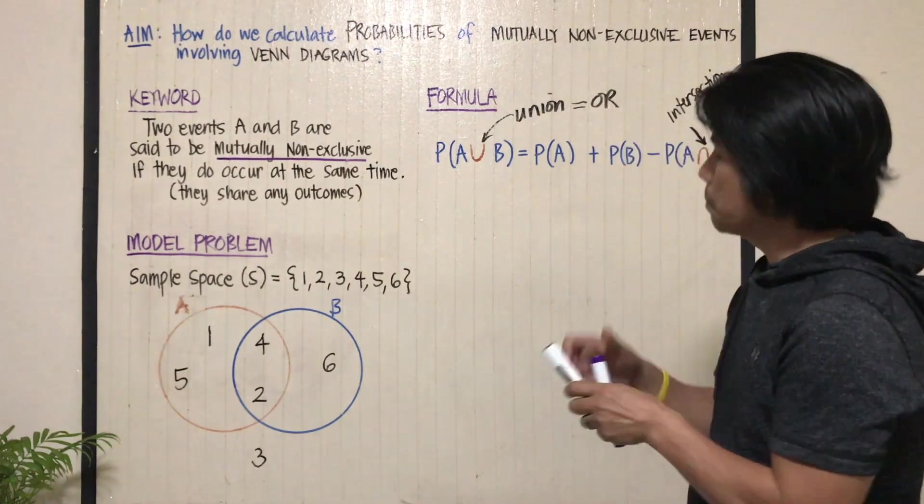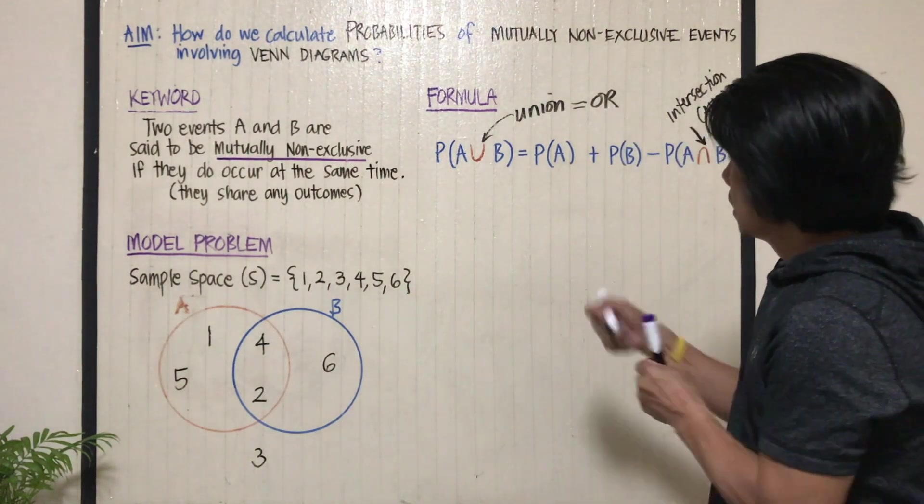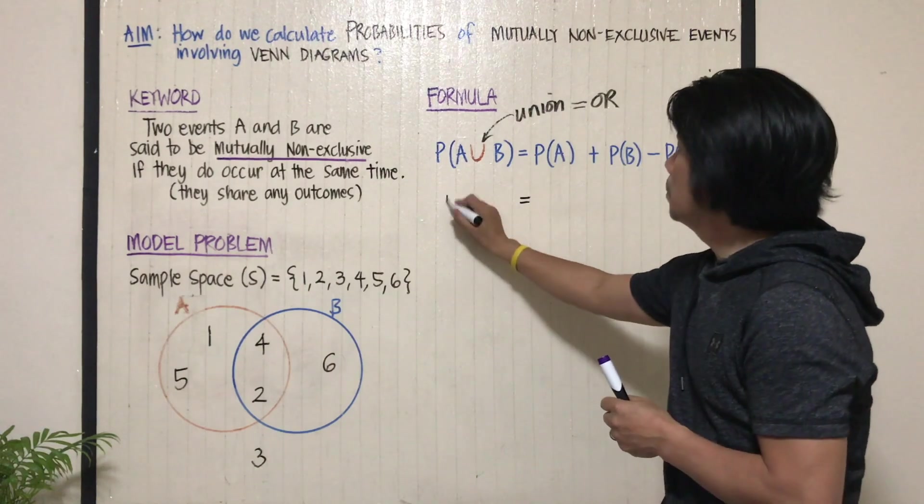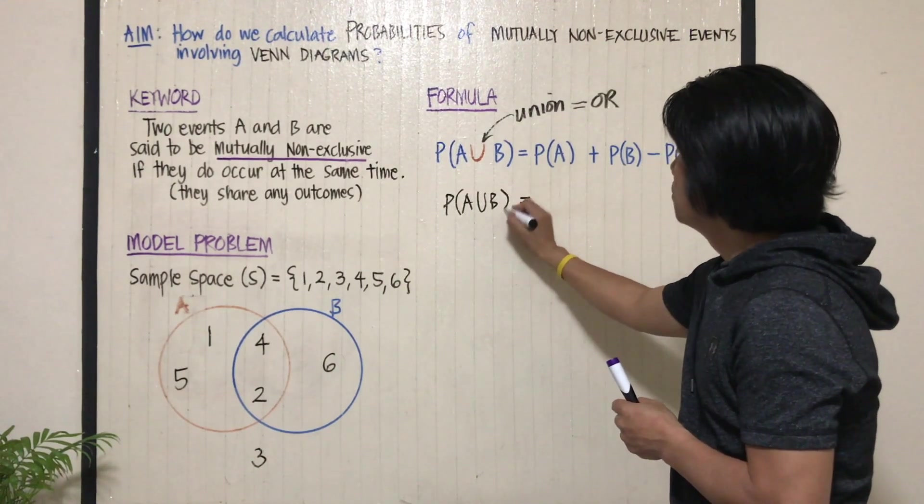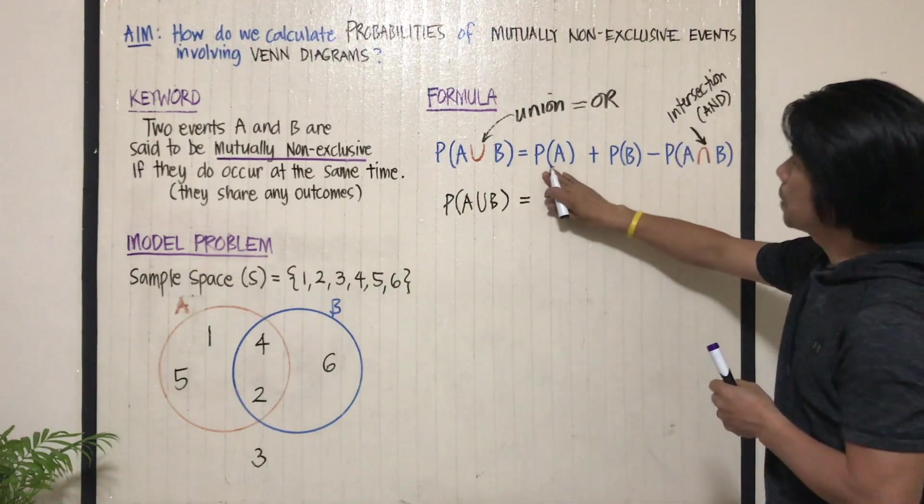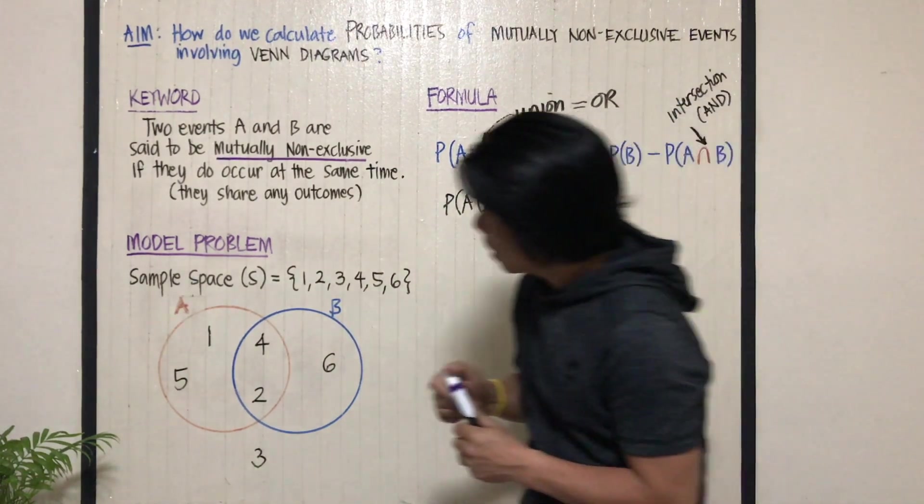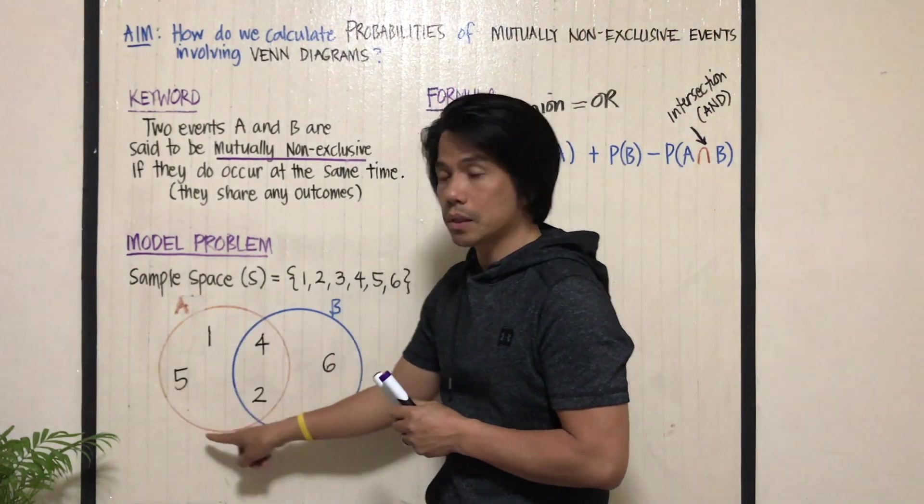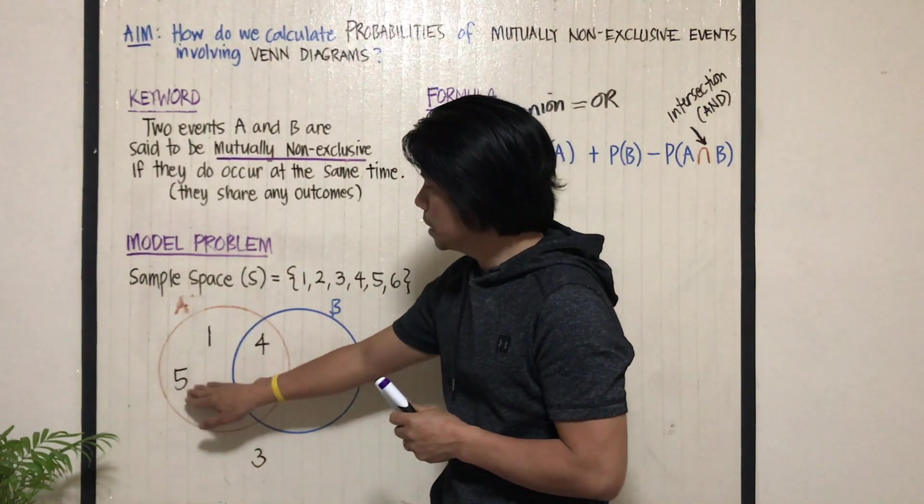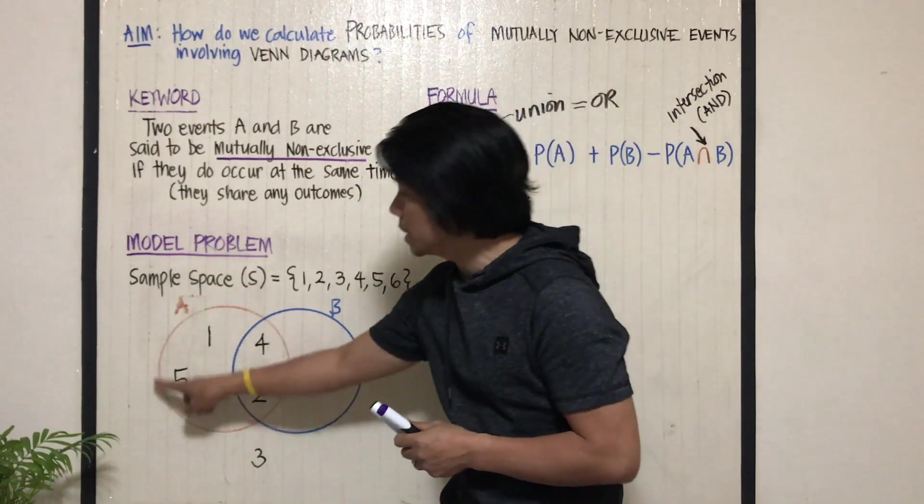So, how do we find the probability? The probability of A union B is equal to the probability of A. What is probability of A? Meaning, how many numbers did you see inside the circle?